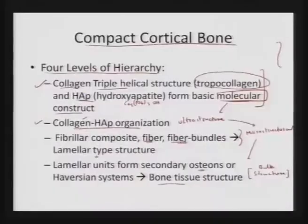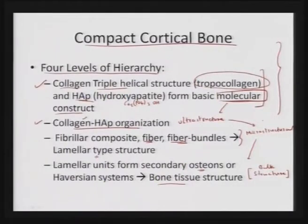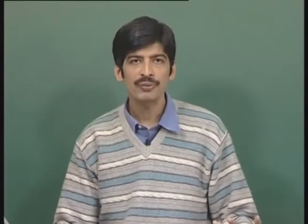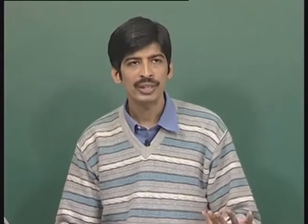We can see in compact cortical bone how these four levels of hierarchy are defined — and these are inherently present, designed by nature. They all have a different way of providing certain properties to the bone. Let us see how these entities are basically being developed.